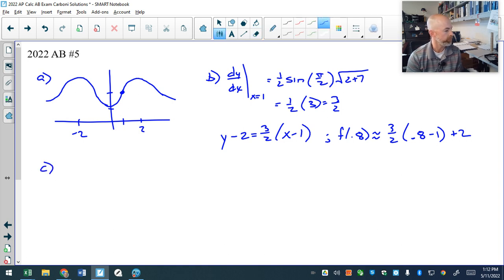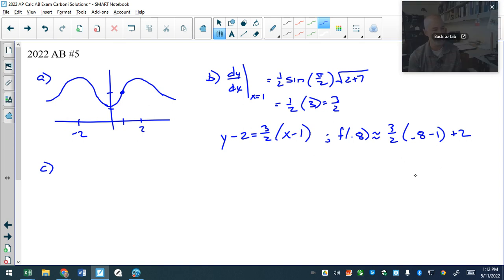Let's go on to part C. It is known that f double prime is positive from negative one to one. Is the approximation in part B an overestimate or an underestimate for f of 0.8? Okay, so what we did, we did linear approximation here, and they tell you that on the interval negative one to one, the function is concave up.